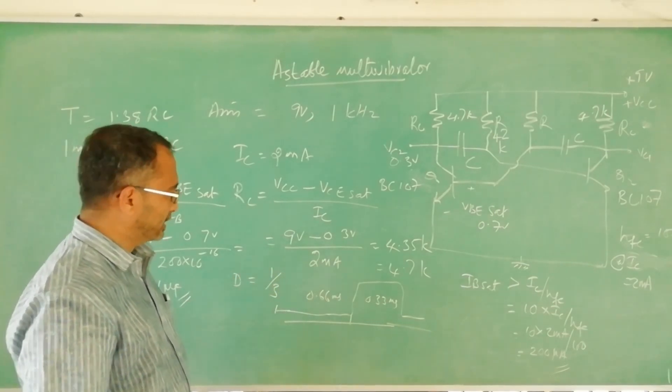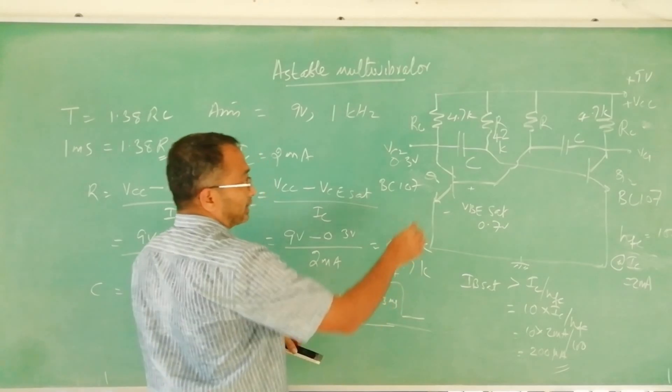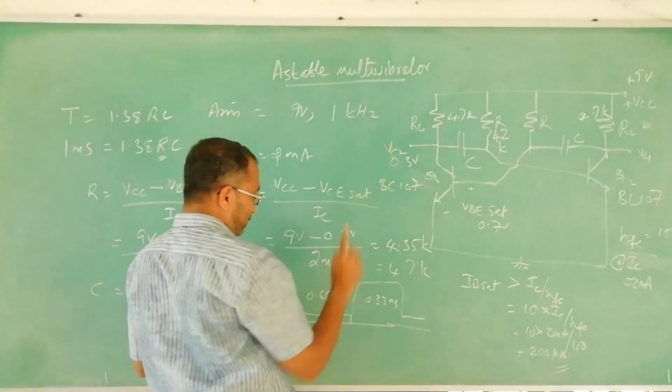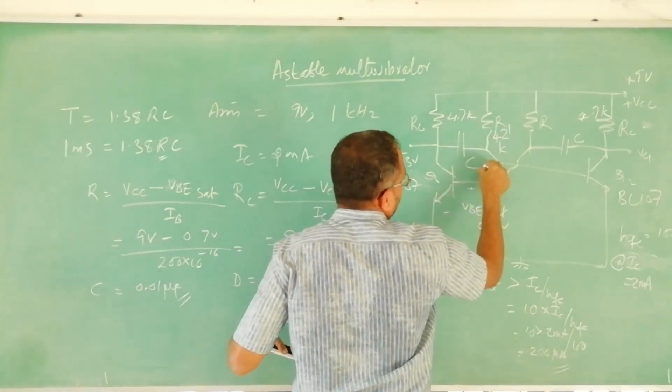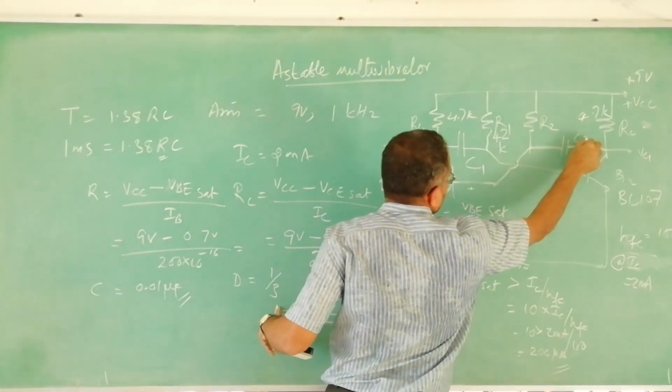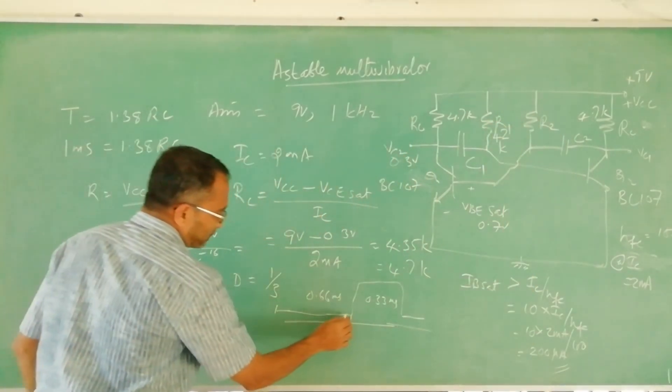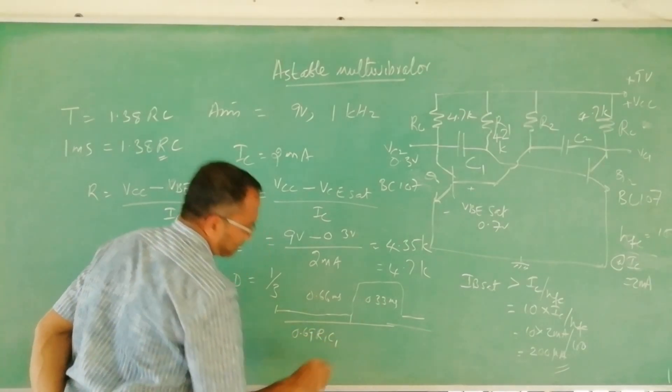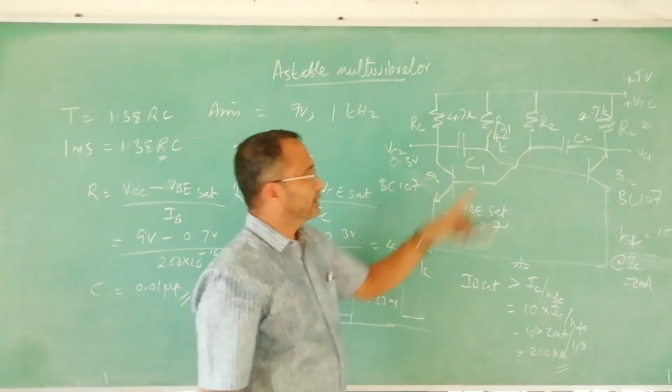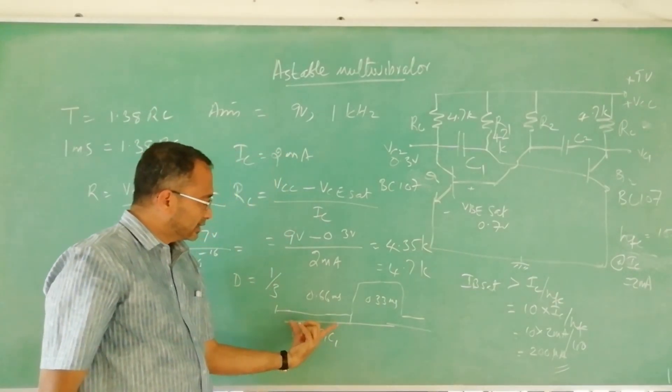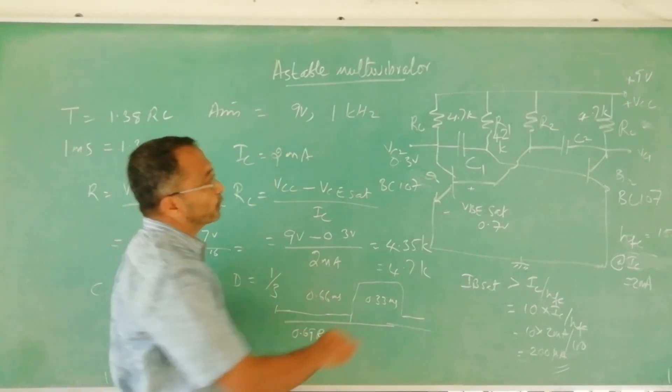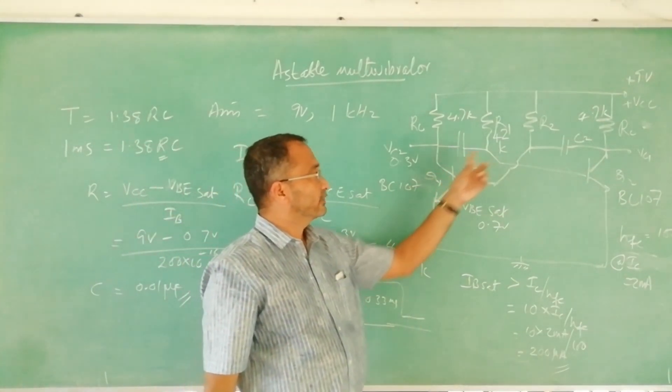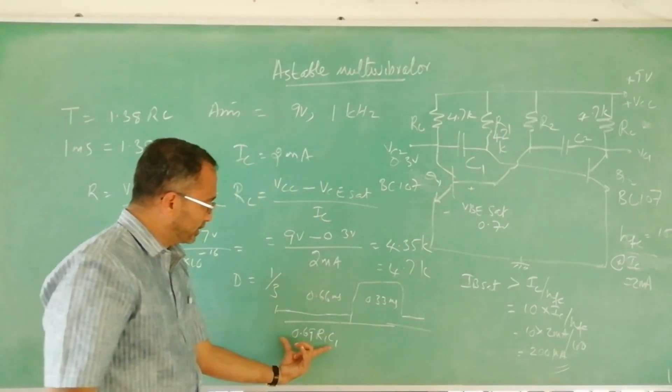In that case we have to decide where from we take the output. If you take the output from here, during this period this transistor should be in one state. R1 and C1, R2 and C2 will decide. So R1 C1 should be equated with this, that means 0.69 R1 C1. This transistor Q1 will be in on state for 0.69 R1 C1.